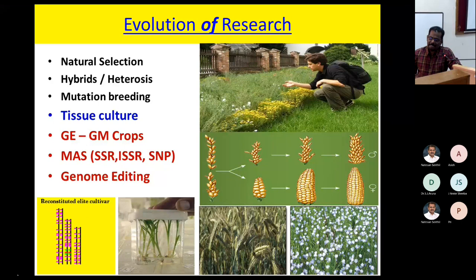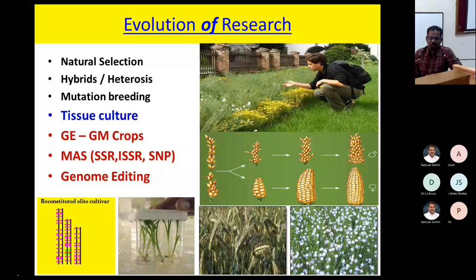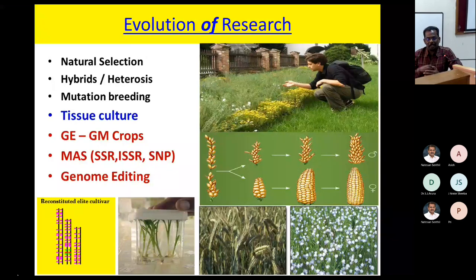Then they started MAS — marker-assisted selection. Markers include phenotypic, biochemical, and genomic markers. For example, the reddish color of carrot is linked to sweetness — a quality trait — so you can select based on color as a phenotypic marker. But the number of phenotypic markers is limited. If you look at genomic markers, millions are available. You only need to identify how a marker is linked with a quality or quantity trait. Famous ones are SSR, ISSR, and SNP markers. The latest SNP markers are mainly used for DNA sequencing and genotyping.